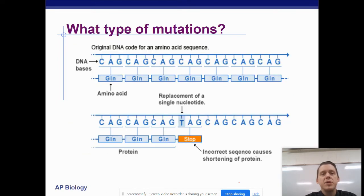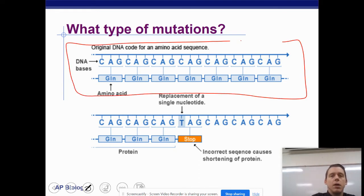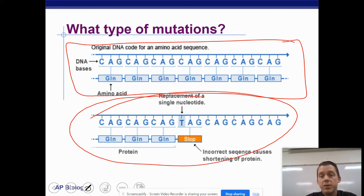So what type of mutation is this? Here's what we should have. And then down here, what I'm circling is what we do have. What type of mutation is that? This is a nonsense mutation. We should have GLN, but instead we have an early stop codon, which is a nonsense mutation.